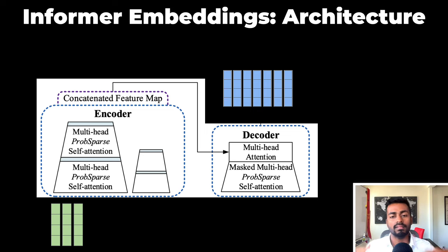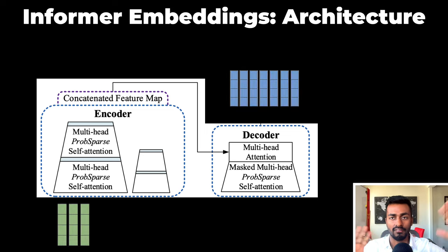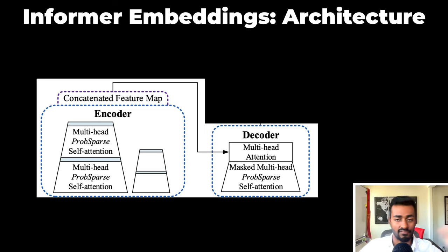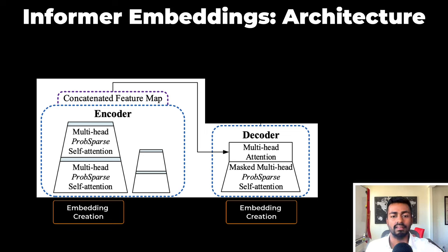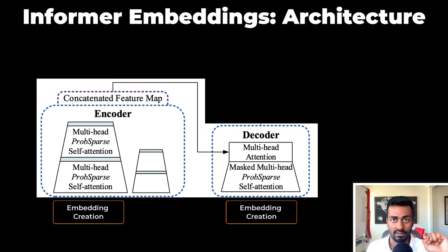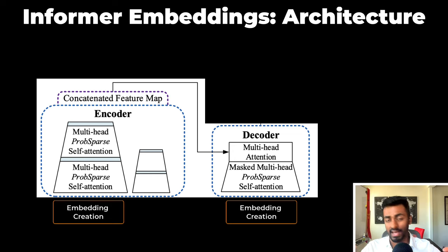Now while this architecture gives us an overview of how the data flows, there is an embedding creation section that really isn't emphasized in this image. This embedding creation happens near the input of the encoder and the decoder. So let's zoom in and actually take a look at how this embedding is created.